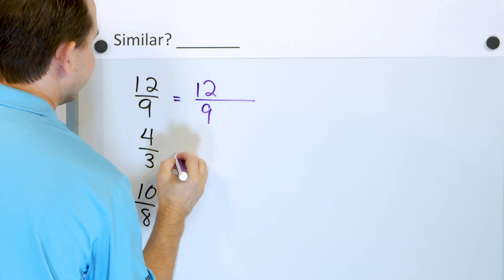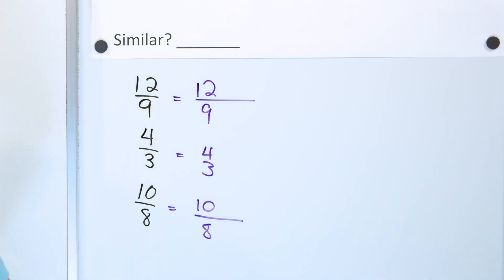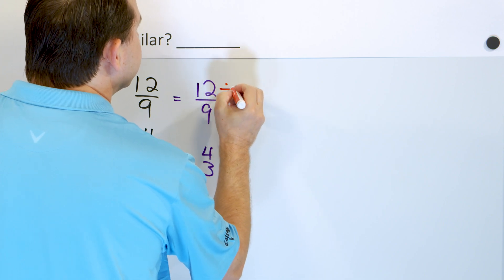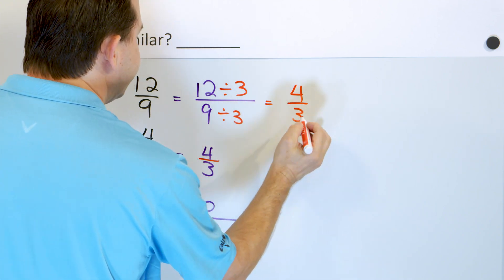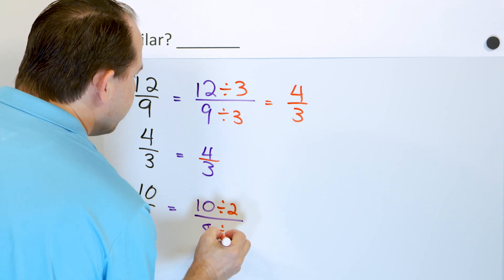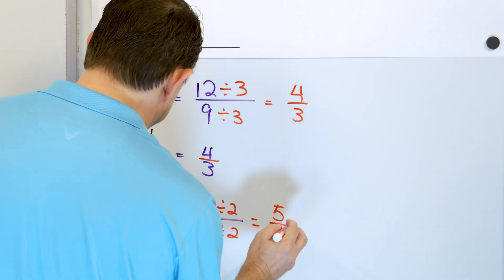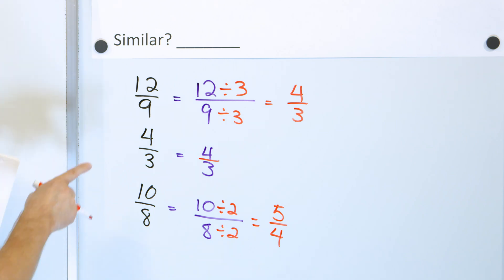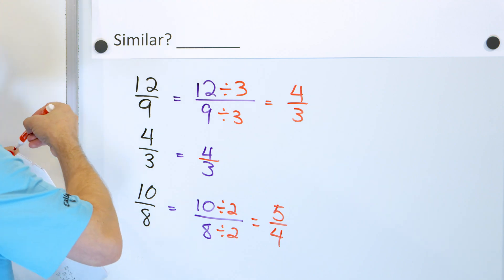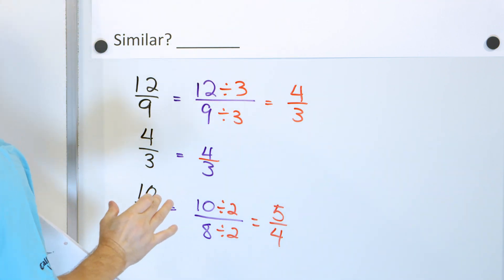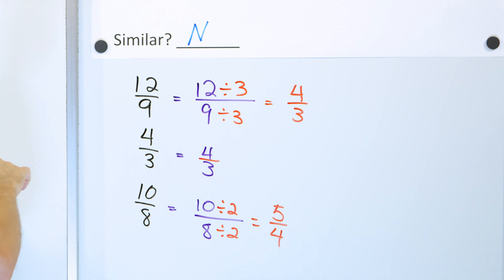Let's simplify all three. 12/9 divided by 3 gives 4/3. The fraction 4/3 is already simplified. And 10/8 divided by 2 gives 5/4. So we get 4/3, 4/3, and 5/4. All three ratios have to match exactly if the figures are similar. Since 4/3 and 5/4 are different, these are not similar triangles. The answer is no.